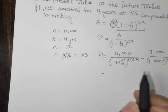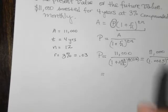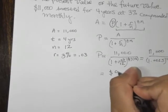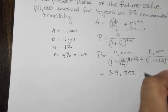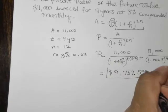So you work all that out on your calculator, and you'll get something that looks like this. So this is $9,757.59. So this is the present value.